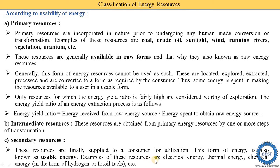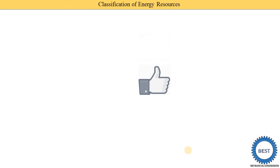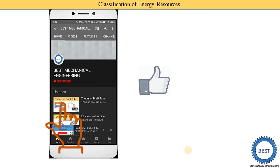Examples of secondary resources are electrical energy, thermal energy, and chemical energy. Before moving ahead, I request you to like the video and subscribe to my channel for more videos related to renewable energy or other mechanical engineering subjects. Links are provided in the description, playlist, and cards.